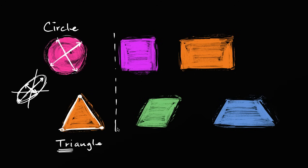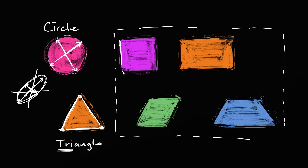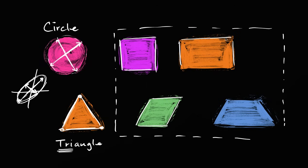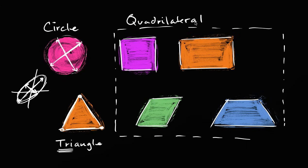Now, what about these shapes over here? How many sides do these shapes have? If you count them, you see that the purple one up here has one, two, three, four sides. This one has four sides. This one has four sides. This one has four sides. So they all have four sides. Our name for any shape that has four sides is quadrilateral. When you see "quad" at the beginning of a word, it's a pretty good sign that you're dealing with the number four — four sides. That's what quadrilateral means.